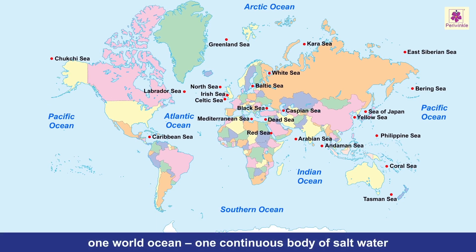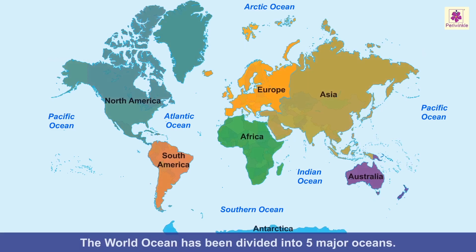The Earth's vast stretches of water are divided into five oceans and many seas. Actually, there is only one world ocean — one continuous body of salt water. There are no real borders and the water flows around freely. Based on the continents that frame them, the world ocean has been divided into five major oceans.